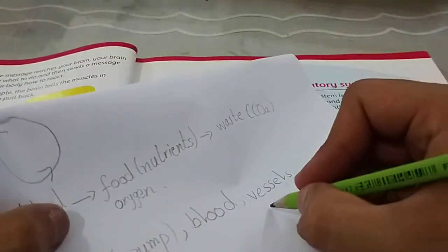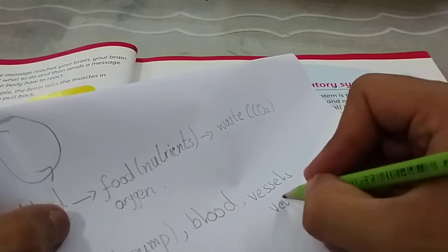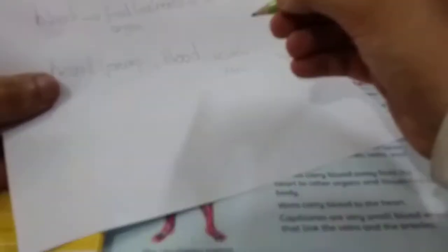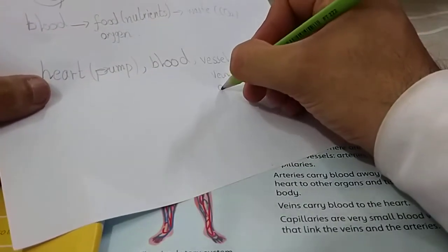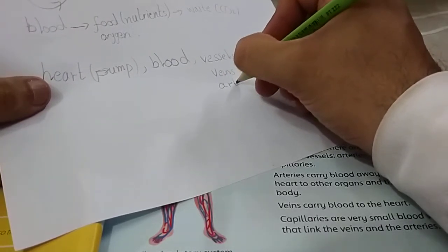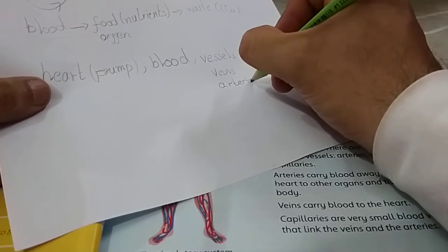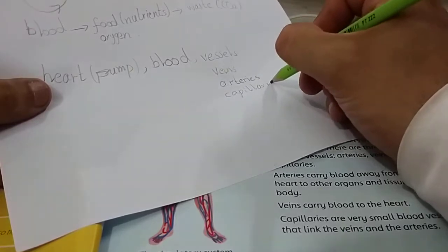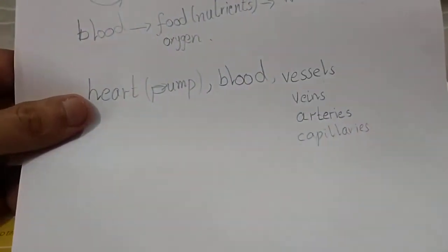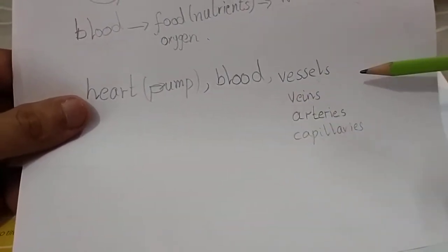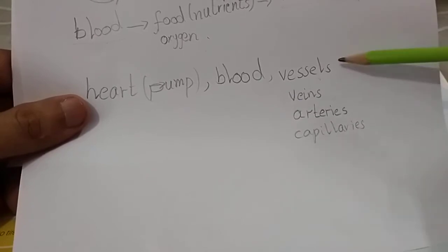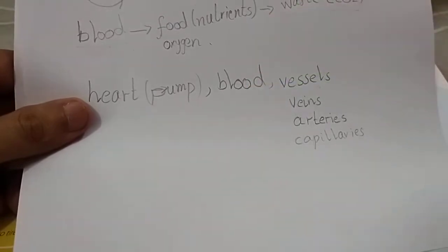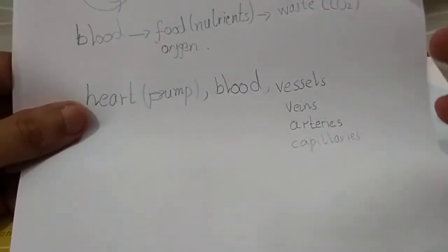There are different types of vessels, called blood vessels. We have veins, then we have arteries, and then we have capillaries. So basically there are three main parts: heart, blood, and vessels. Vessels are further divided into three types. The nutrients reach our body and the heart is the main pump.